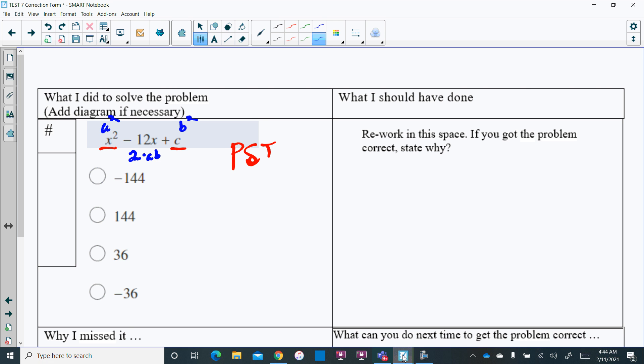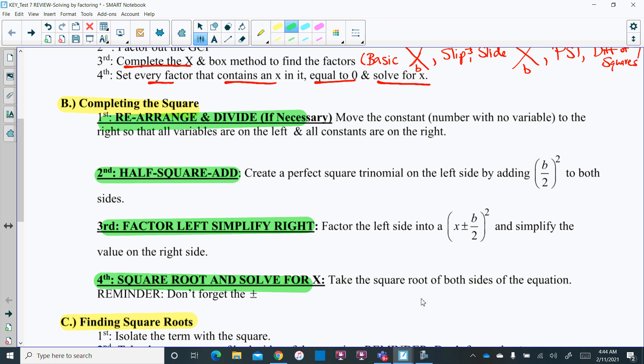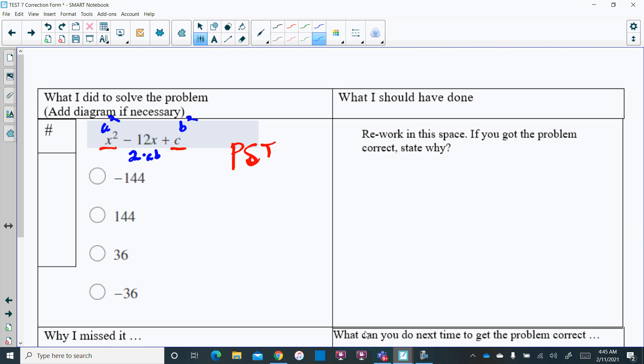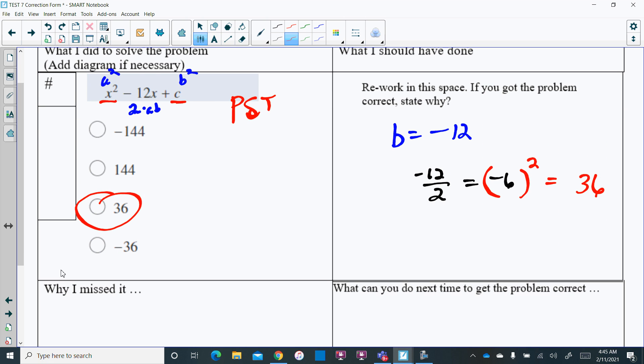Really all we had to do to get our c is, our step tells us right here, we got to take half and then square it. This could have been done mentally. Basically our b equals negative 12, so then we needed to take half of that which gave us negative 6, and then we needed to square that. When we square it, it actually comes out to be a positive 36, and that's all we needed to do there. If you missed this, make sure you have the rework now that I just showed you.